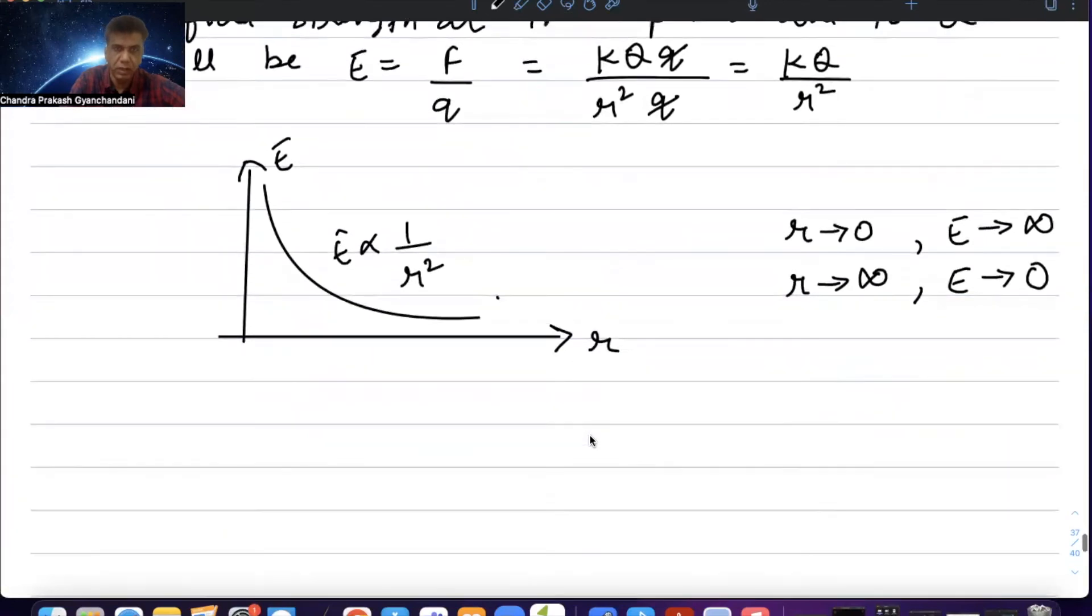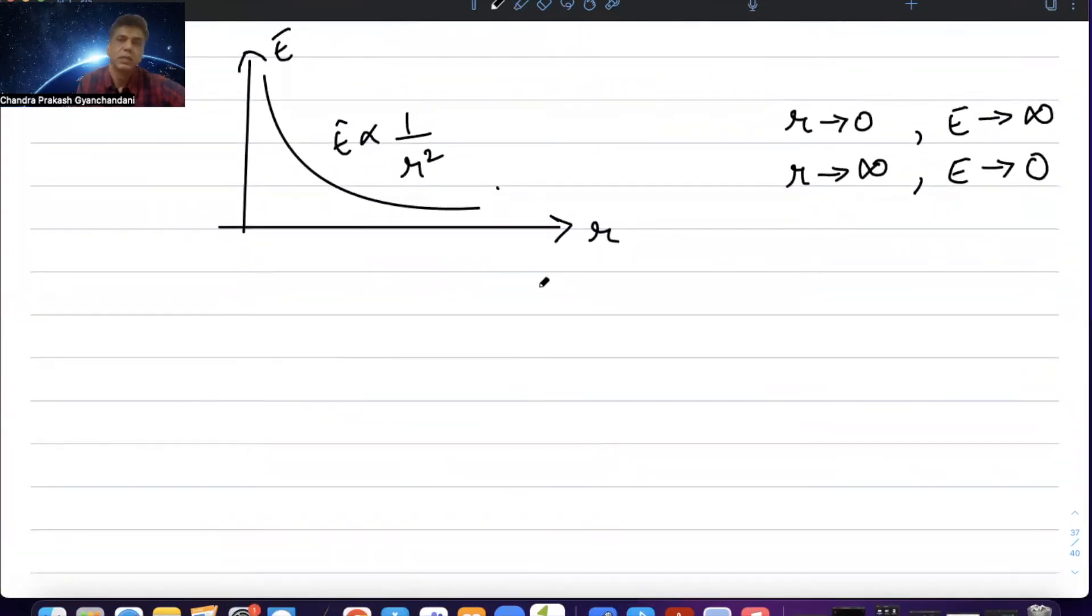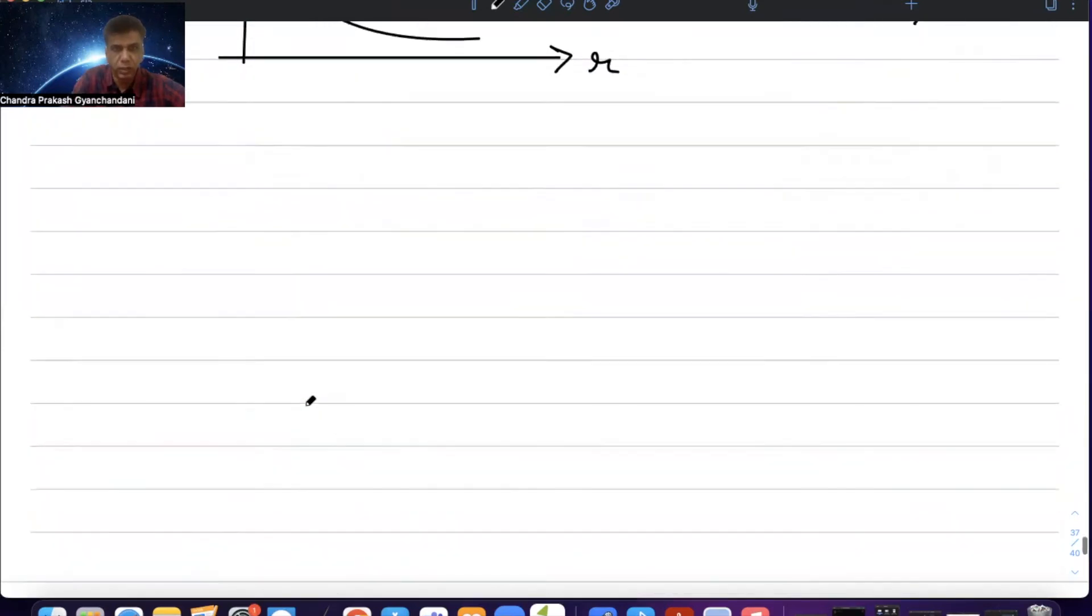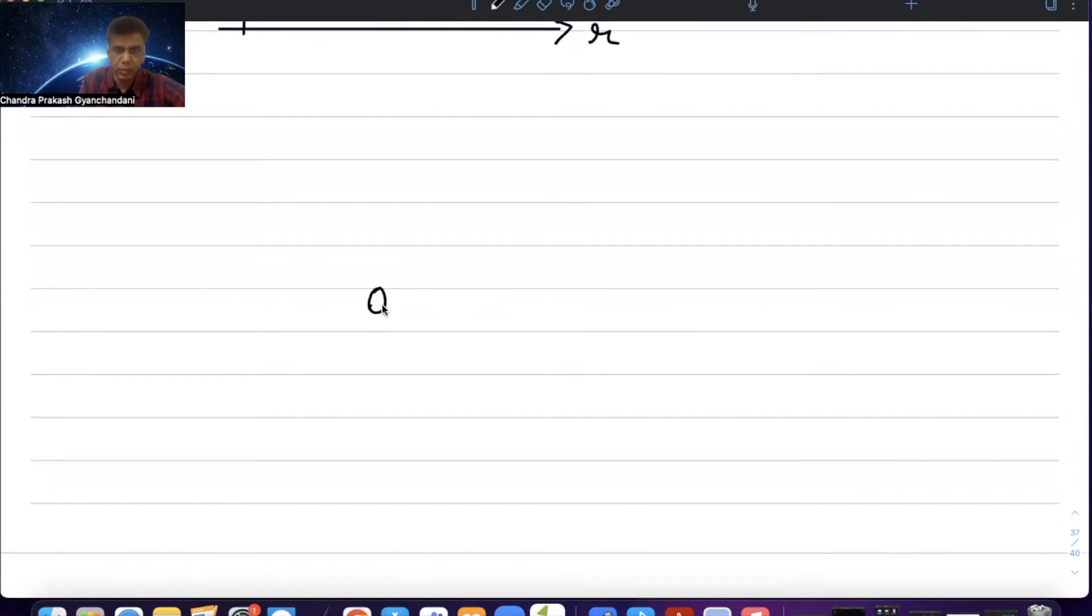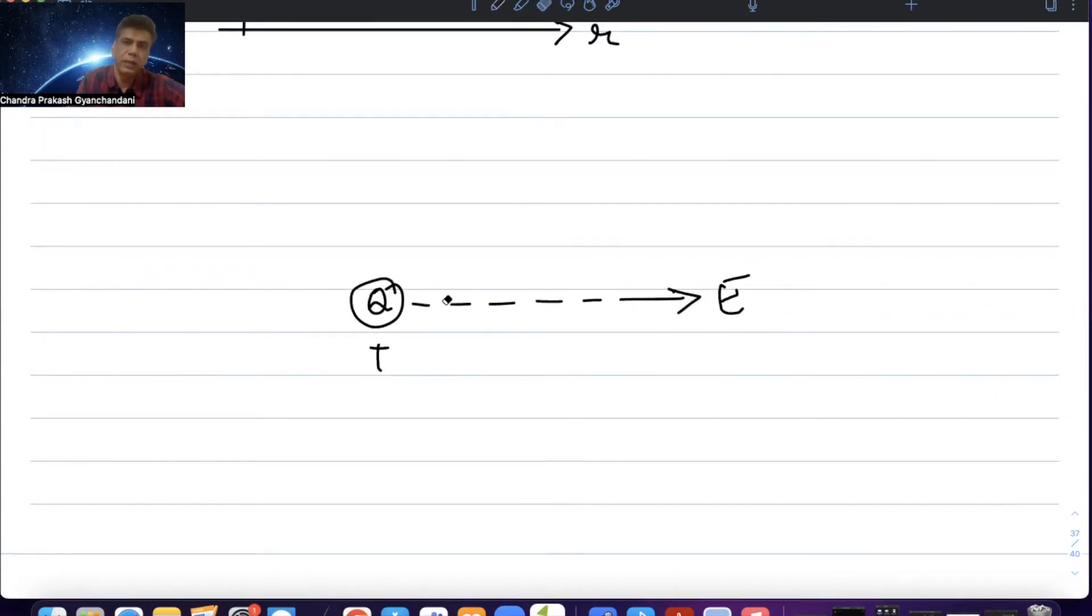This is the field due to a positive point charge source. If the point charge is positive, it will produce a field away from it. If it is negative, it will produce towards it.